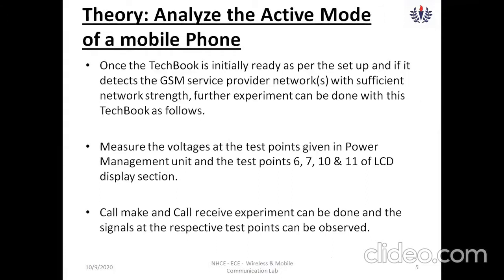First, we will look into the active mode. Once the tech book is initially set up, it starts detecting your signal and you will see signal bars on the screen. Once you have sufficient network strength, we proceed with functionality checking for the active mode. You will have test points numbered 6, 7, 10, and 11 just beside the LCD display.